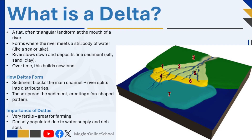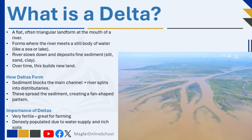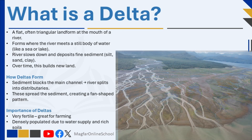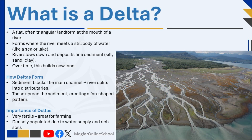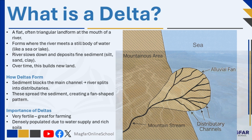Deltas are flat, often triangular landforms found at the mouth of a river, where it flows into a still body of water like a sea or lake. As the river reaches this point, it loses energy and drops the remainder of its sediment load — made up of fine silt, sand, and clay — gradually building up new land. Sometimes the river's main channel becomes blocked by sediment, forcing it to split into multiple smaller channels called distributaries. These help spread the sediment even further, creating the fan-shaped pattern typical of deltas.